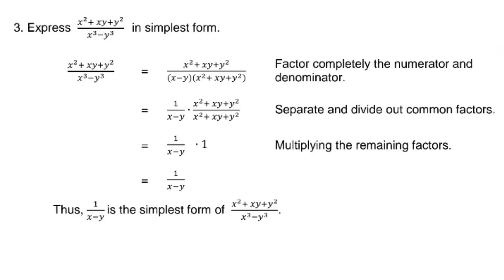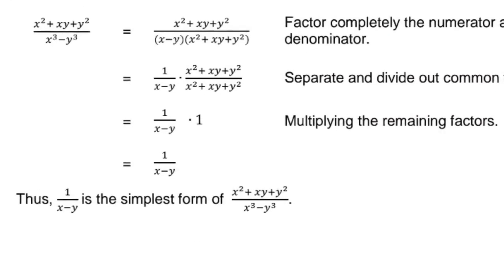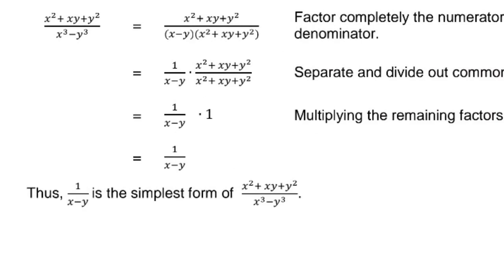Number 3: Express x squared plus xy plus y squared over x cubed minus y cubed in simplest form. The denominator is a difference of two cubes, which factors as (x minus y)(x squared plus xy plus y squared). The numerator is x squared plus xy plus y squared, which also appears in the denominator. Separating the common factor gives 1 over (x minus y). So the answer is 1 over x minus y.